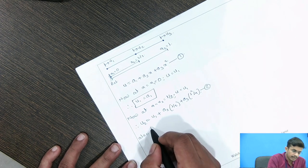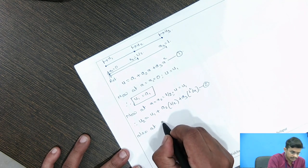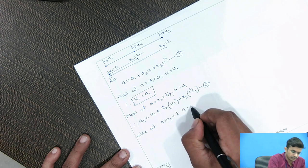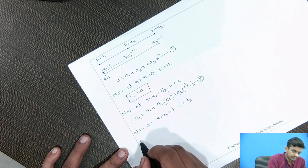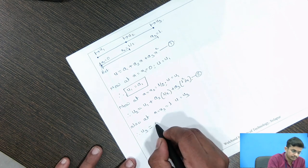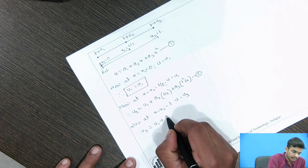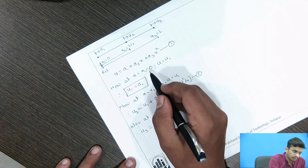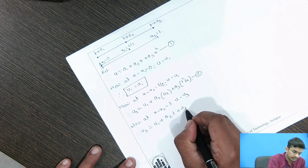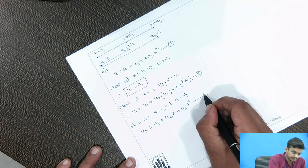Also, at X equals X3 equals L, U equals U3. Therefore, U3 equals U1 plus A2·L plus A3·L squared. This is our equation 3.